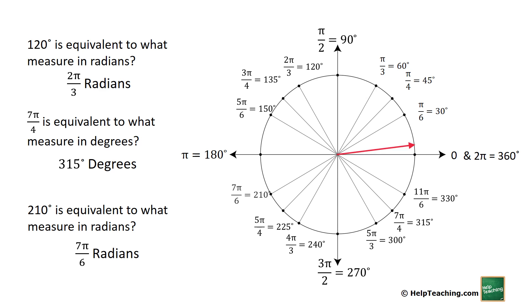210 degrees is equivalent to what measure in radians? We come around and it's seven pi over six radians. So if you come across a situation where you have negative degrees or negative radians, simply start in the same position but rotate clockwise.